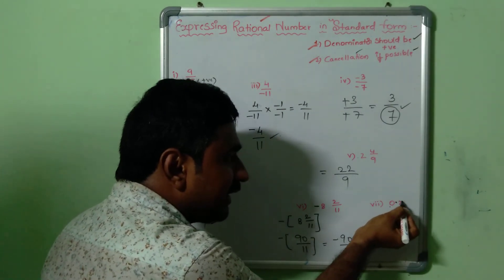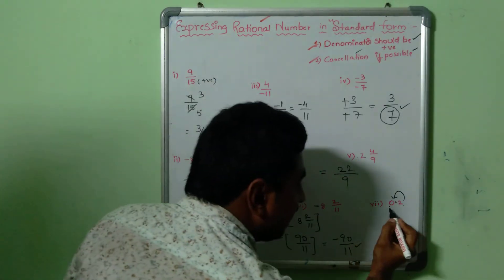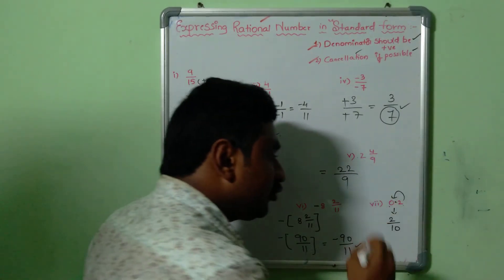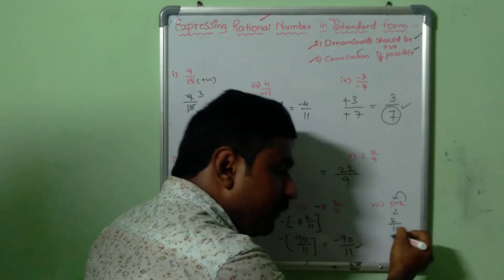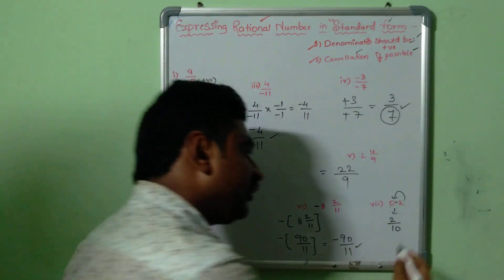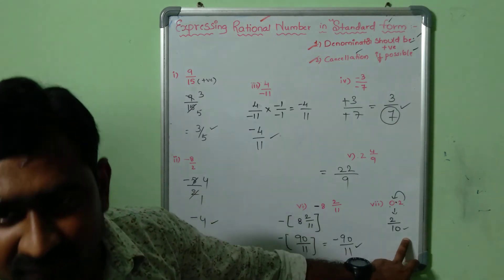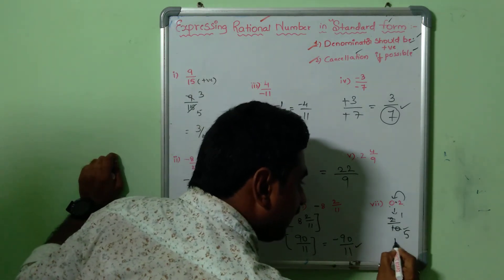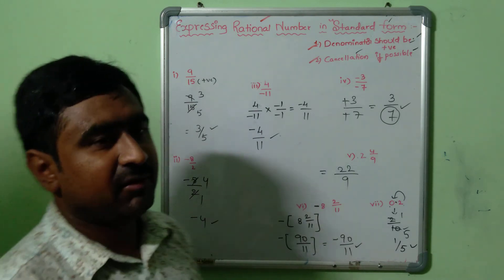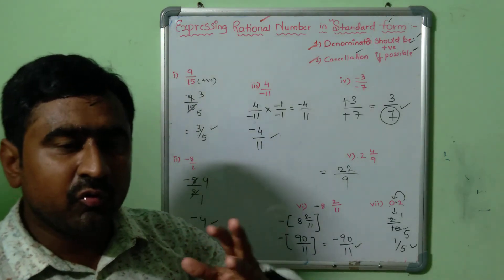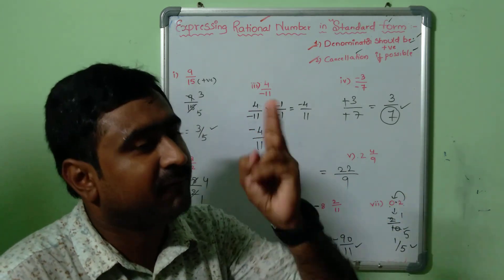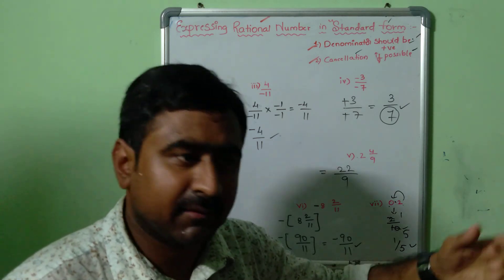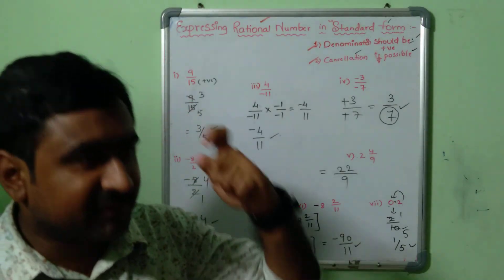Seventh example: 0.2, a decimal. Since the decimal point is after one digit, 0.2 can be written as 2/10. First step — denominator 10 is positive, no issue. Second step, cancellation: 2/10, using the 2 times table, 2×1=2 and 2×5=10, so we cancel to get 1/5. Therefore, 1/5 is the standard form of 0.2. So to express any rational number in standard form, always follow these two rules: denominator must be positive, and cancel if possible.